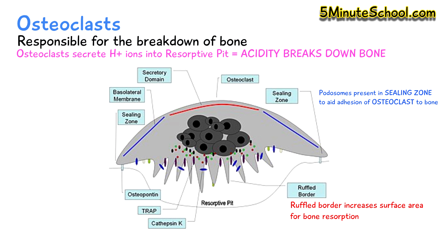The osteoclasts release hydrogen ions through the ruffled border and into the resorptive pit, which increases the acidity and facilitates the breakdown of the bone matrix into calcium ions, bicarbonate, and phosphoric acid. The osteoclasts also secrete enzymes like cathepsin K and matrix metalloproteinases to help with the breakdown of bone.